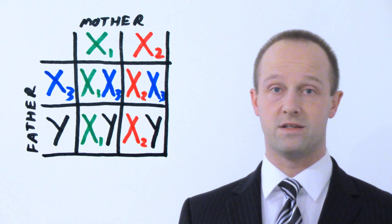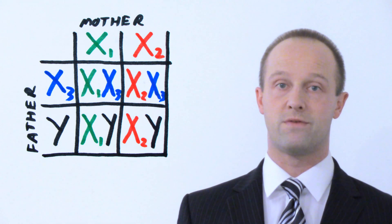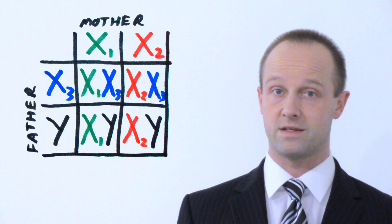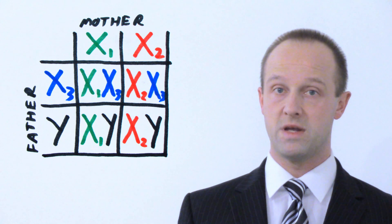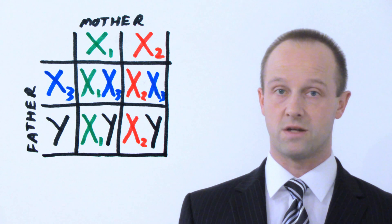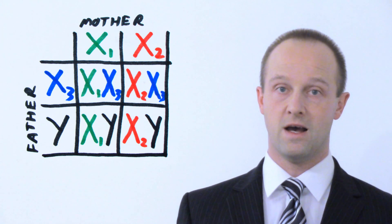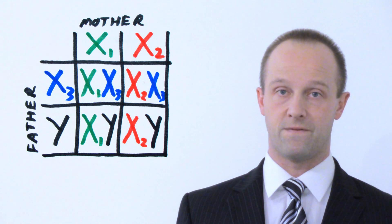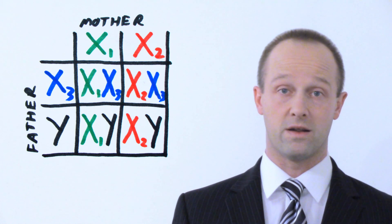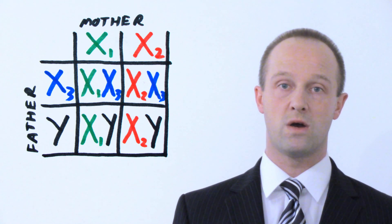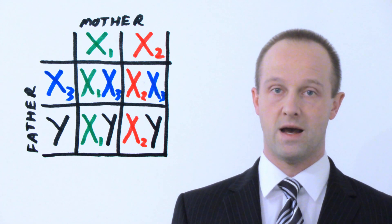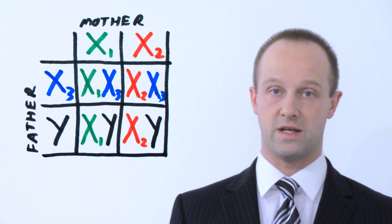We can also use a chart called a Punnett square, which represents the same relationship and shows how genetic information combines. By convention, the genetic information from the father goes horizontally and the mother's goes vertically. Going down the columns, you have the mother's two X chromosomes; going across the rows, you have the father's X chromosome in the first row and Y chromosome in the second, showing all possible combinations.